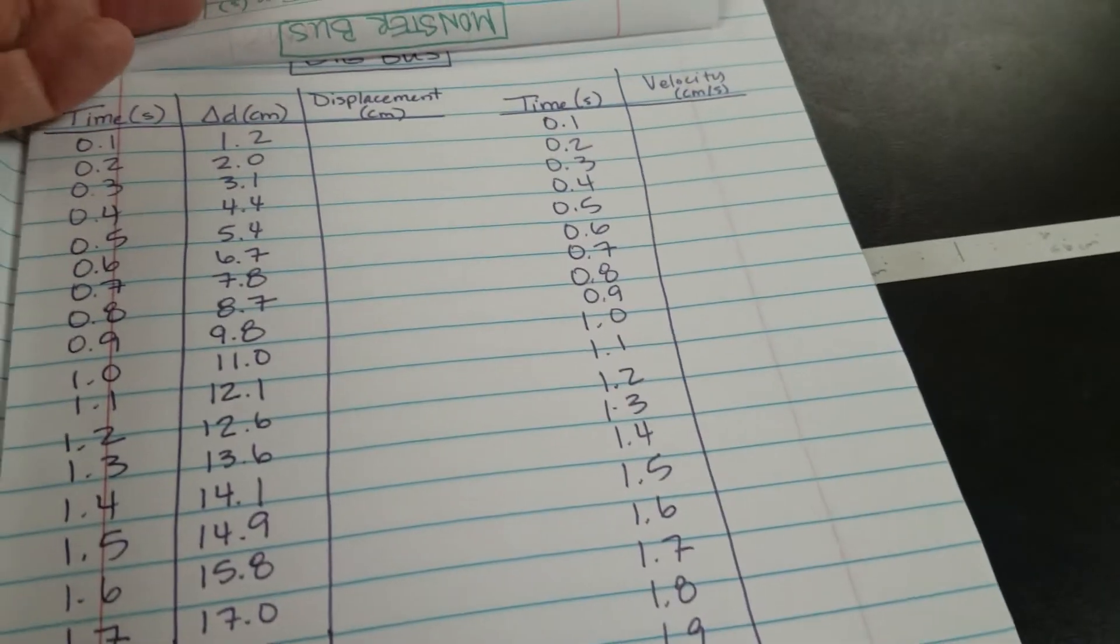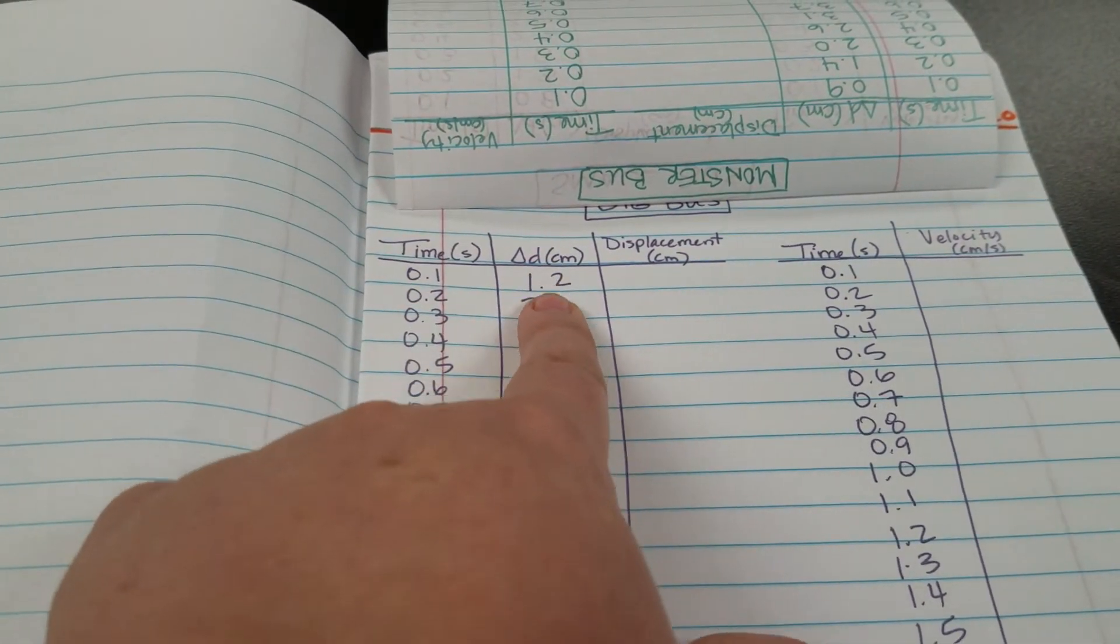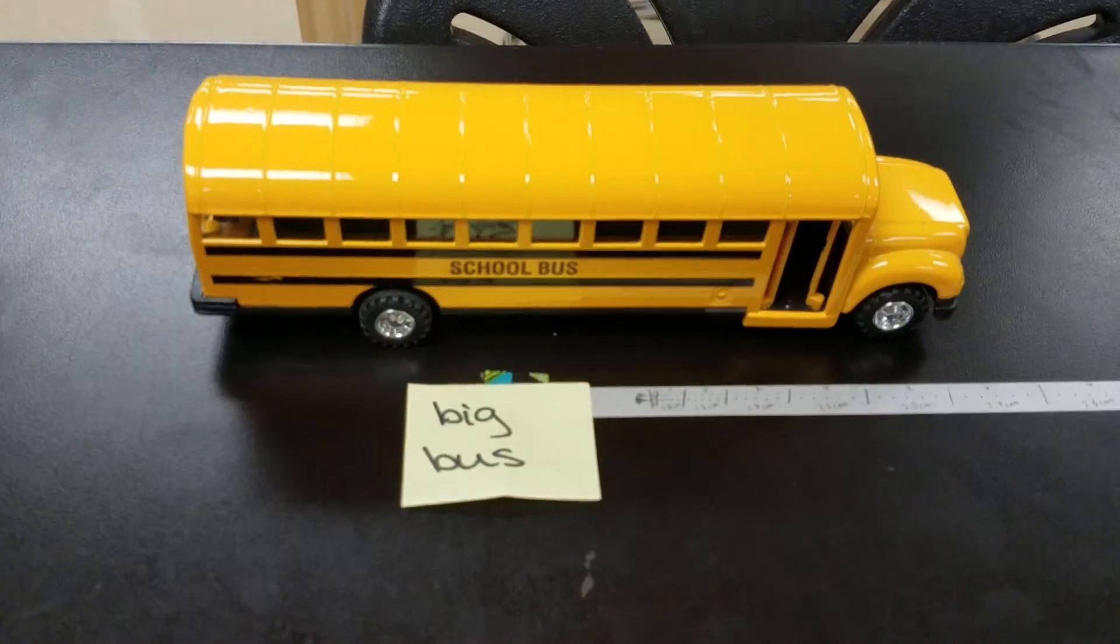The last set of measurements is for the big bus. And again, you're filling in this delta D column right here. And the big bus is this long one right here.